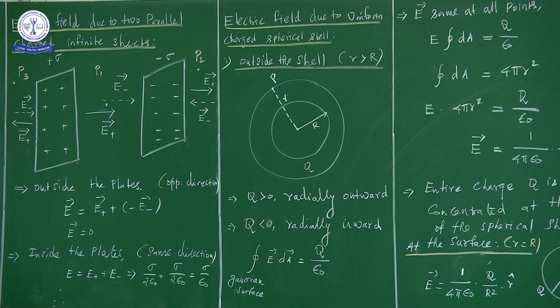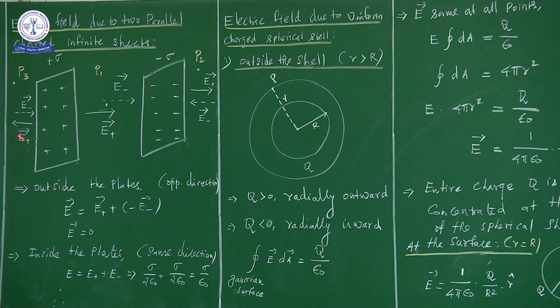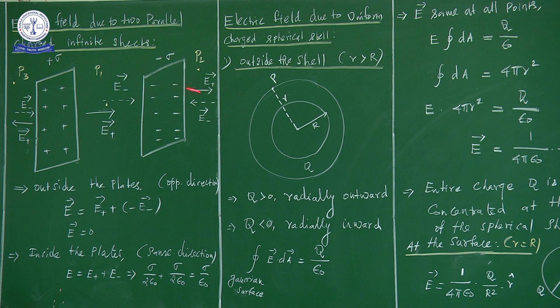For the magnitude, the E plus vector and E minus vector will be added in the same direction. From the last class, for an infinite plane sheet, the electric field is E equals sigma by 2 epsilon. The E plus and E minus vectors have the same magnitude but opposite directions outside the plates. Therefore, outside the plates at P2 and P3, the electric fields are in opposite directions and the total electric field is zero.